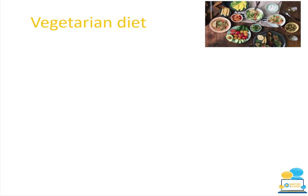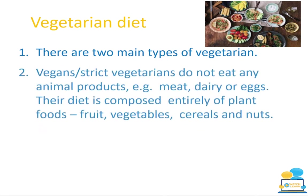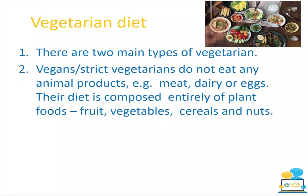There are two main types of vegetarian. Vegans, also known as strict vegetarians, do not eat any animal products at all. This includes meat of any type — chicken, mince, beef — as well as fish, dairy such as milk, cheese and yogurts, and eggs. Their diet is composed entirely of plant foods including fruit, vegetables, cereals and nuts.